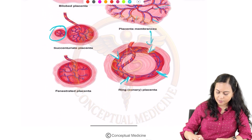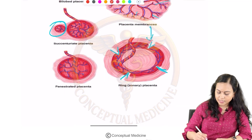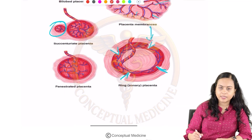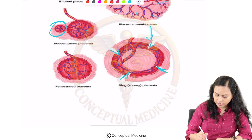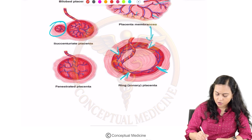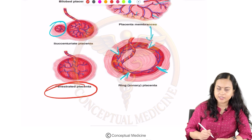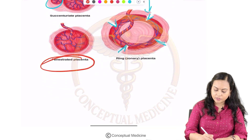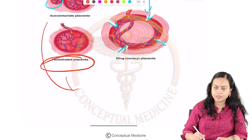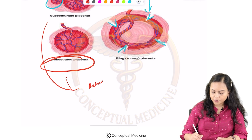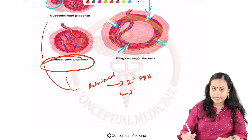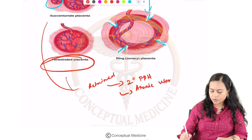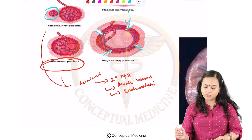Next one is a fenestrated placenta. Here basically the central lobe of the placenta will be missing — that region appears light in color, meaning some of the lobes are missing. In fenestrated placenta and succenturiate lobe placenta, there can be retained placental tissue that can lead to secondary postpartum hemorrhage, atonic uterus, or endometritis.